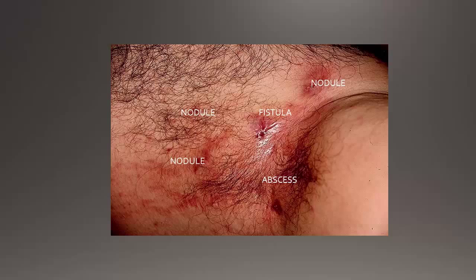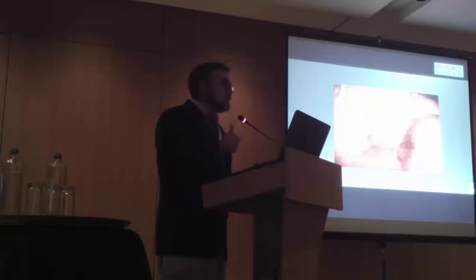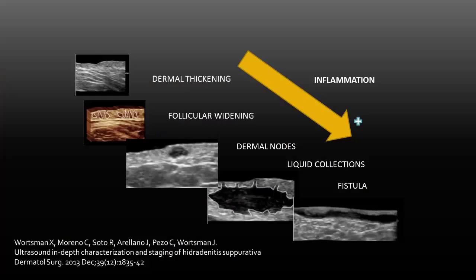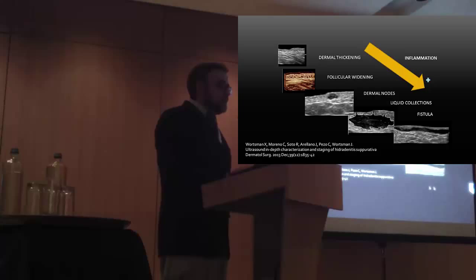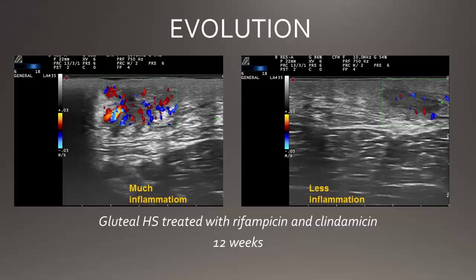The paradigm of this is hidradenitis suppurativa. Hidradenitis suppurativa is very complicated from a two-dimensional point of view, because in this picture it's very difficult to see where is the node, where is the axis, and where is the fistula. The only way to discriminate these lesions is through ultrasound. Thanks to the publication of Dr. Wortsman, we started to understand this disease in three dimensions and realized there was a progression of lesions as they were deeper — a gradient of inflammation with deeper lesions contrasting with superficial ones. Patients with mostly deeper lesions deserve more aggressive treatment than those with superficial lesions.